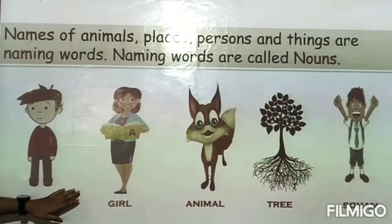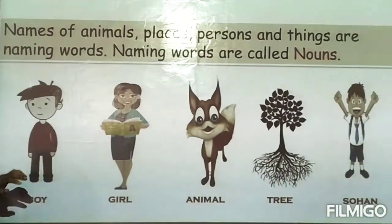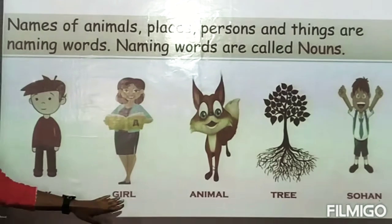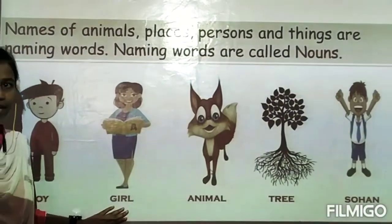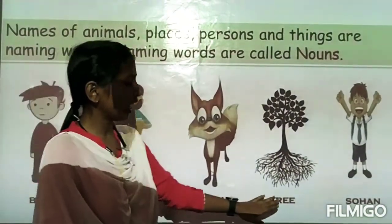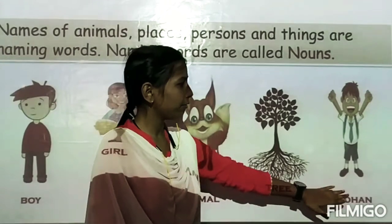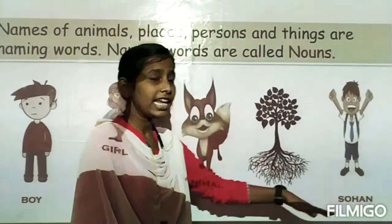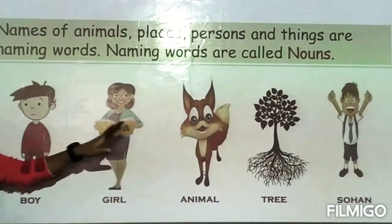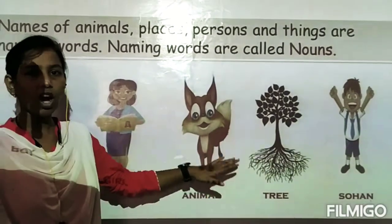Here are all examples of nouns, such as: boy, girl, animals, tree. These are all examples of nouns for class 1 and 2.